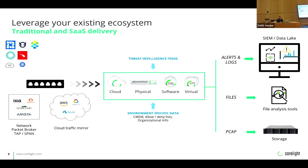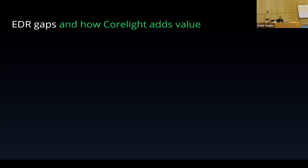Rob Joyce, the head of the NSA TAO around 2016 at Usenix, said his worst nightmare as an offensive professional was out-of-band network security monitoring — the ability to sit passively on the network, unknown to attackers, and just take a copy of the traffic and generate metadata. It's a pretty powerful concept, like an invisible security guard.